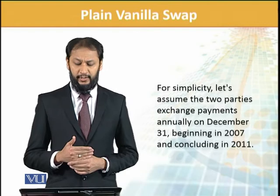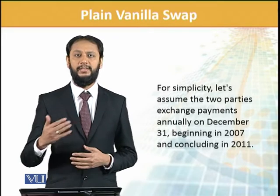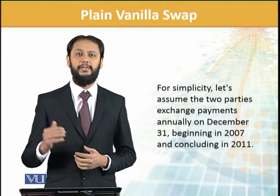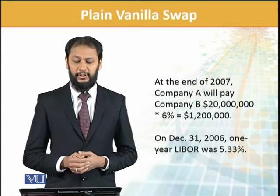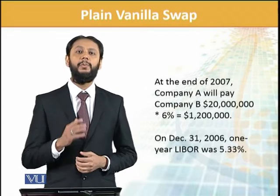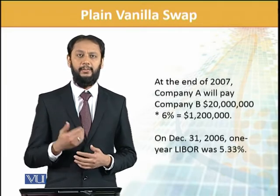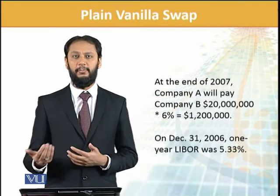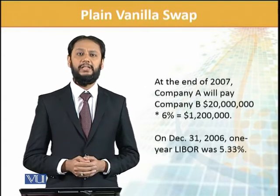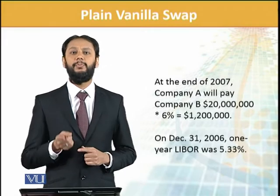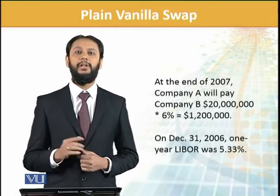For simplicity, assume that payments are made on December 31st each year, starting 2007, with the agreement entered in 2006. Company A is theoretically paying Company B 6% on 20 million, which is 1.2 million. But since net payment is made, we check what Company B owes. For that, we look at the LIBOR rate — at that point, LIBOR is 5.33%. The agreed rate was LIBOR plus 1, so that comes to 6.33%.